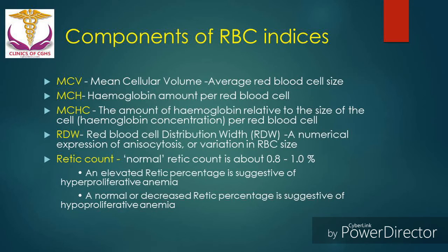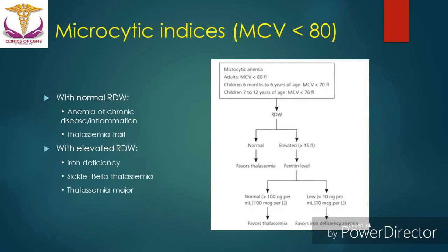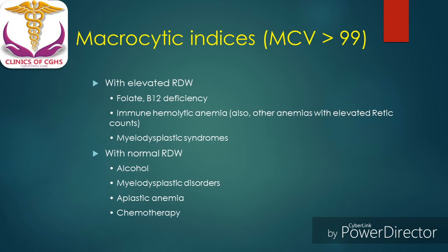RDW is the expression of the level of anisocytosis in peripheral blood. It is classified as microcytic when MCV is less than 79, and macrocytic when MCV is more than 98. This is the first starting point of classifying anemia. Please remember: when both micro and macrocytic features are available in the same sample, it is reported as normal MCV — this is the foremost and important pitfall.